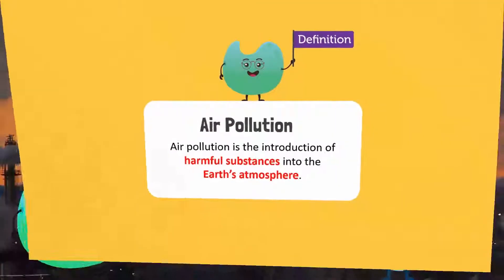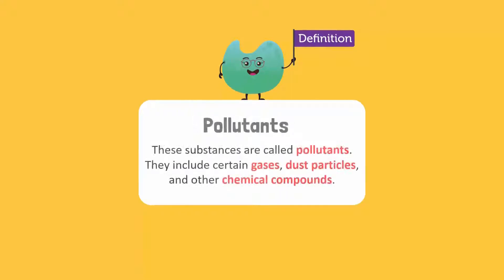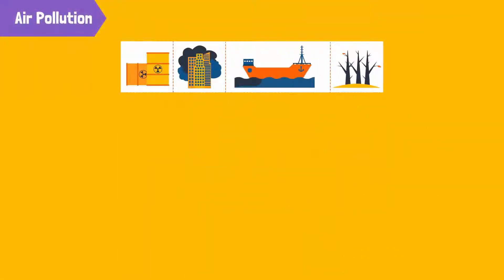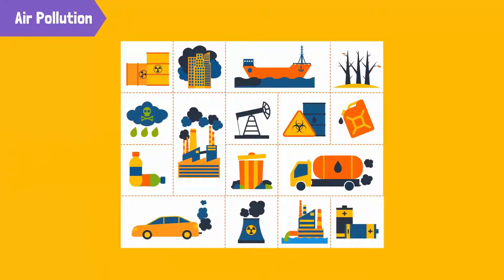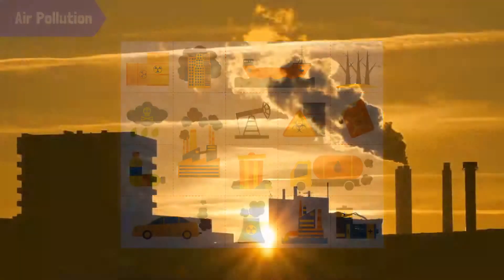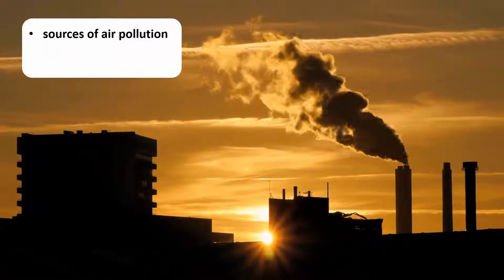Air pollution is the introduction of harmful substances into the earth's atmosphere. These substances are called pollutants. They include certain gases, dust particles, and other chemical compounds. Pollutants are released by both human activities and natural processes. In this video, we are going to learn about the sources of air pollution.